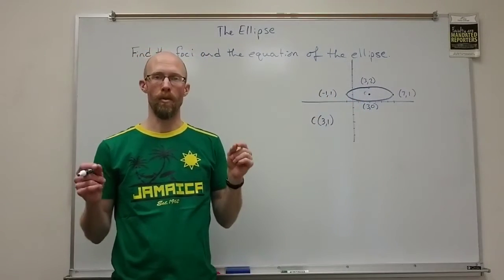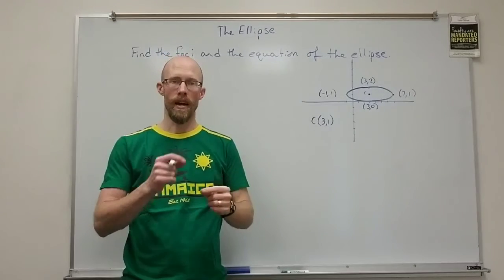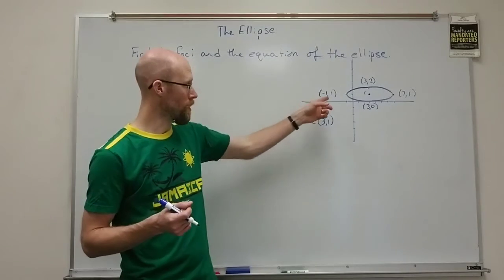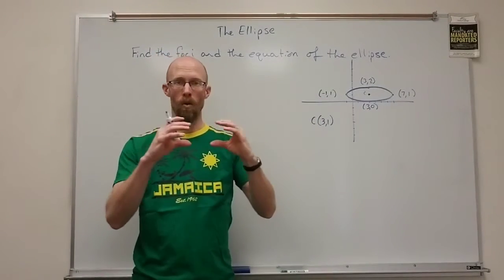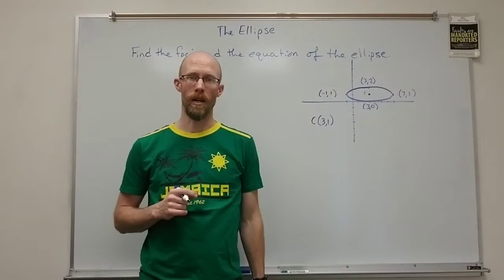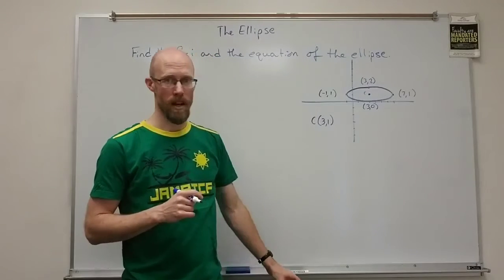The two endpoints to the major axis which are the vertices and the two endpoints to the minor axis. I also know that this ellipse is oriented in a horizontal direction meaning its major axis is parallel to the x-axis.